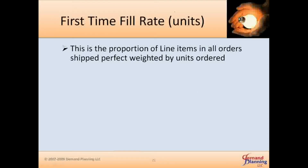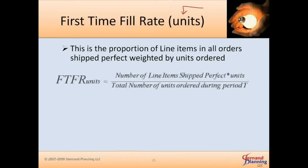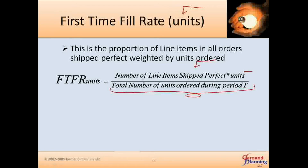On the other hand, if you look at the weighted unit number, there's a proportion of line items in all orders shipped perfect weighted by units ordered. You still take the line items, but then weight by the number of units for that particular line item, and the total number of units ordered is the denominator. The key is you are still looking at the number of line items shipped perfect, weighted by the units requested — that's what you report as the fill rate.